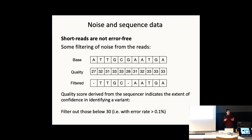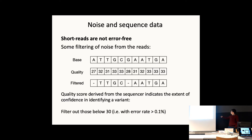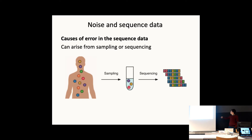To deal with error, each read comes off the machine with an inherent quality score. The error rate is 10 to the power of minus the quality score divided by 10 — so a quality score of 30 means an error rate of 0.1 percent. We can filter the data by removing reads with quality below a threshold of 30, discarding some of the data where error rates are too high.